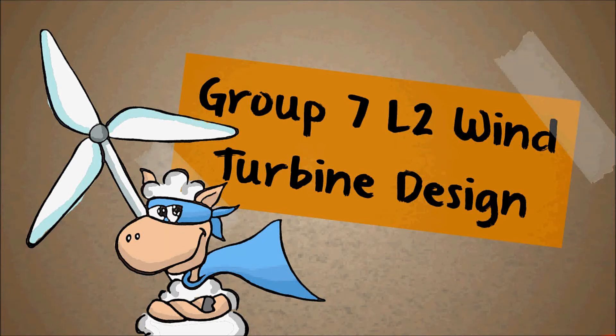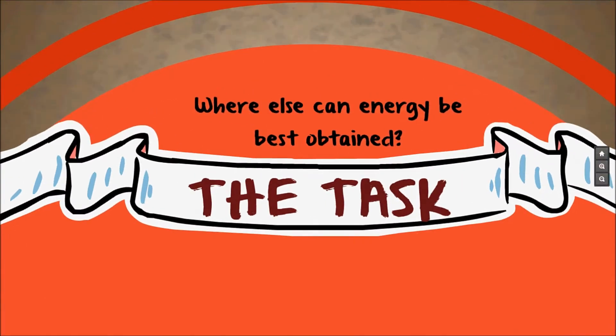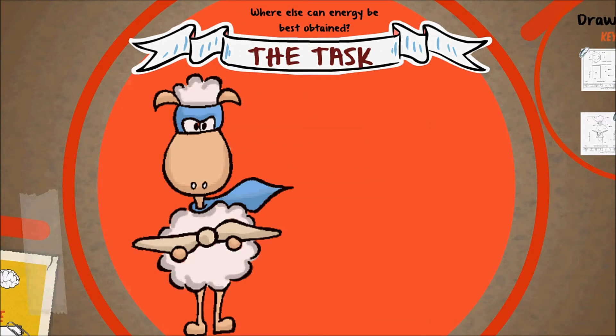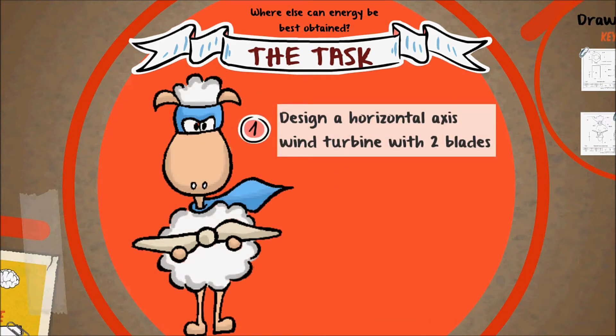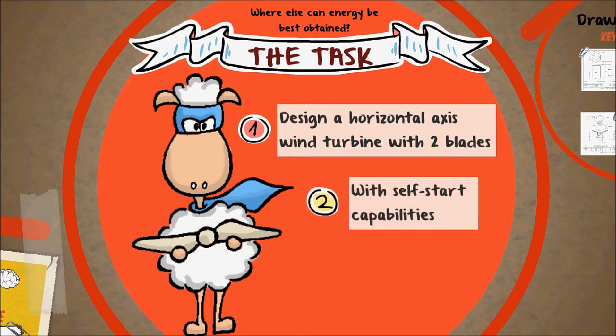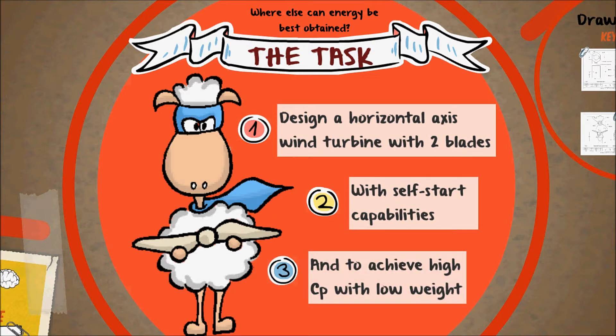Hi everyone, we are Group 7 and here is our L2 project. A recap of the tasks that we are given: First, design a horizontal axis wind turbine with two blades. Next, make sure that it has self-starting capabilities at 10 meters per second wind speed. And finally, achieve high CP with low weight.